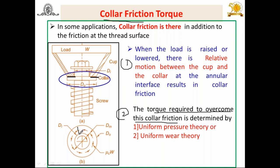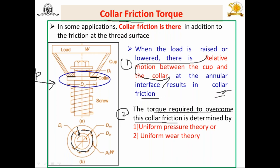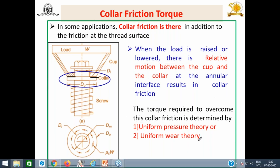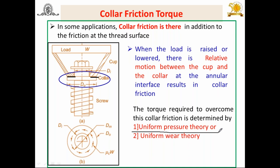The collar is an integrated part of the screw, and collar friction occurs at the annular interface between the cup and the collar. The collar friction torque is determined using two theories: uniform pressure theory and uniform wear theory — the same theories used in the design of clutch in Theory of Machines.